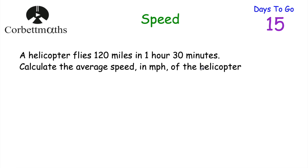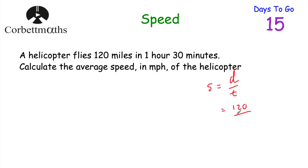This time we've got: a helicopter flies 120 miles in 1 hour 30 minutes. Calculate the average speed in miles per hour of the helicopter. Feel free to press pause now. So speed equals distance divided by time. The distance is 120 miles. The time is 1 hour 30 minutes — 30 minutes is half an hour, so that's 1.5 hours. So we do 120 divided by 1.5, which equals 80. So the average speed of the helicopter is 80 miles per hour.